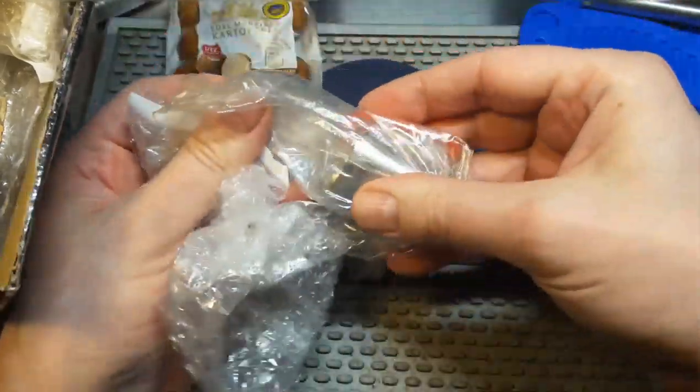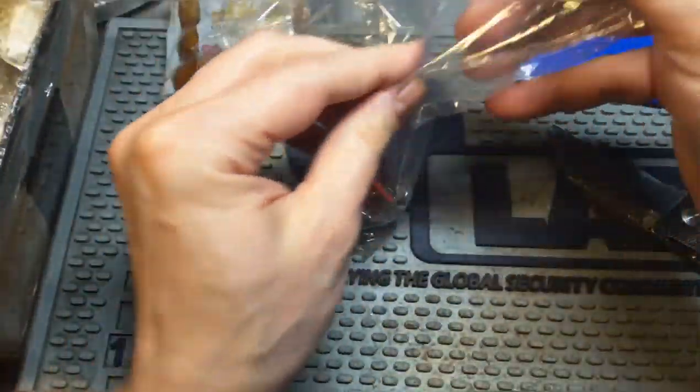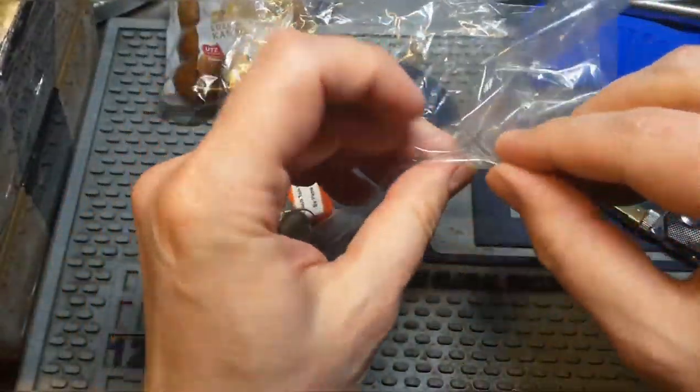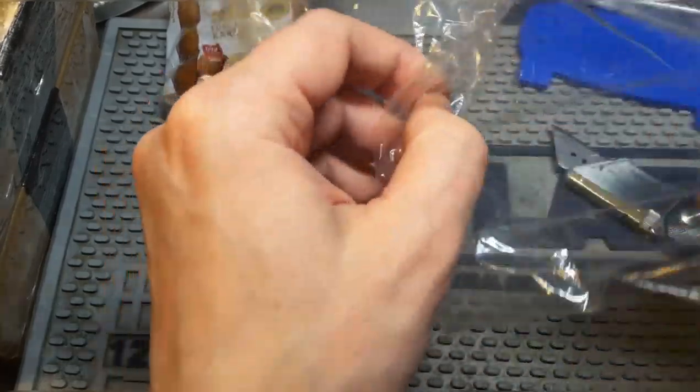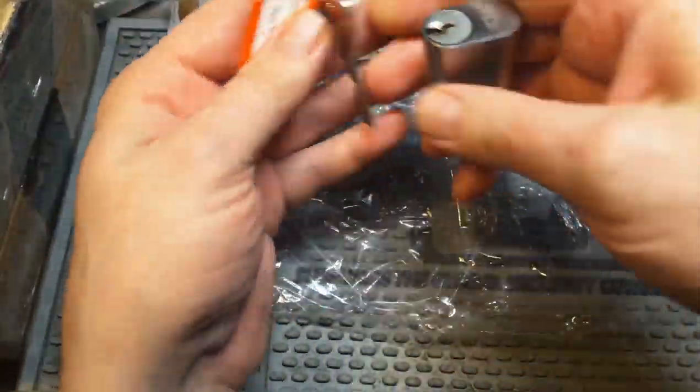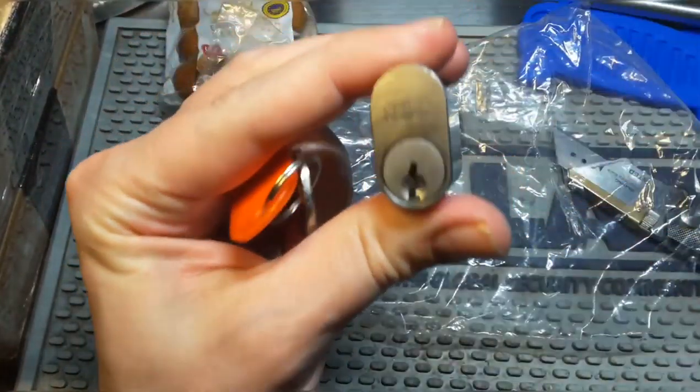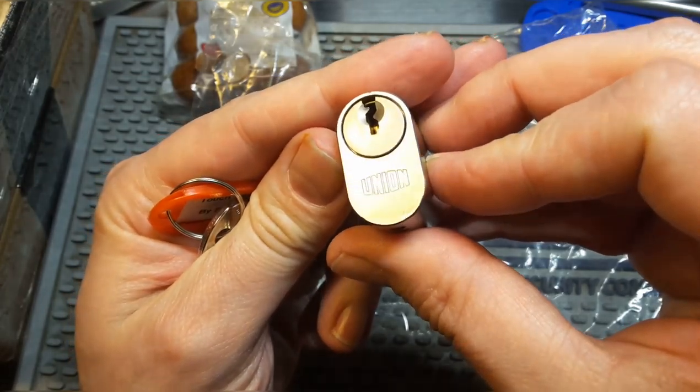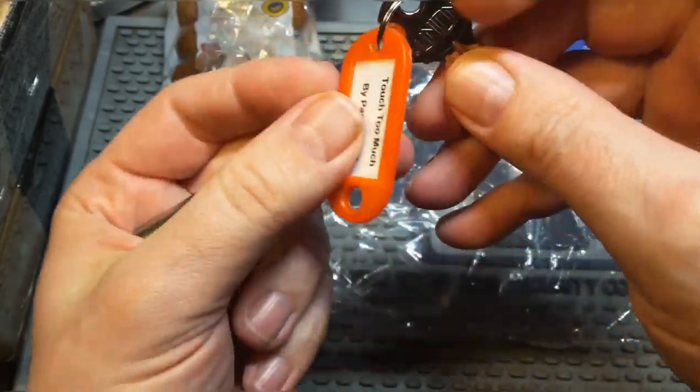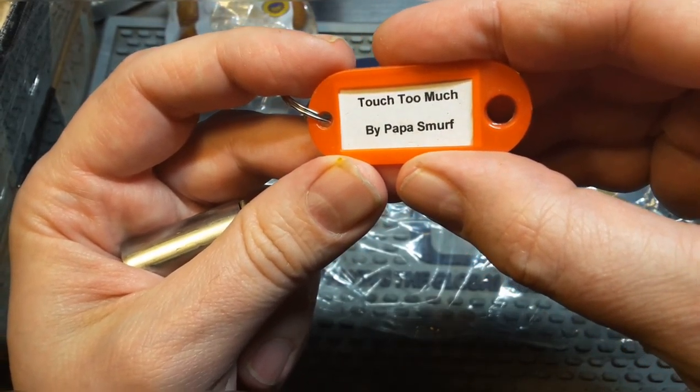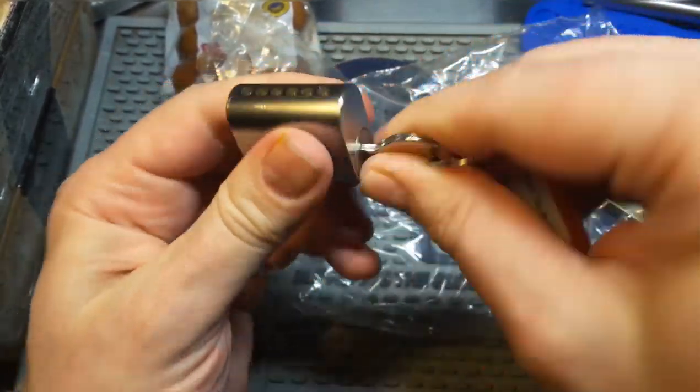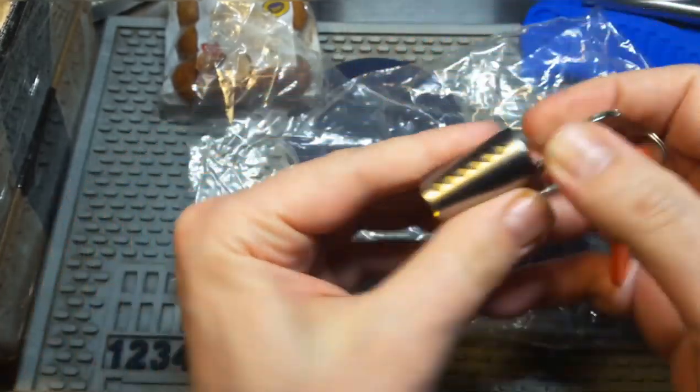This looks like a challenge lock. Don't want to destroy the package. Let's have a look. It's in Union. Touch Too Much by Papa Smurf. Oh, nice. This is the first challenge lock made by Papa Smurf. Wow, it looks perfect. Nice.